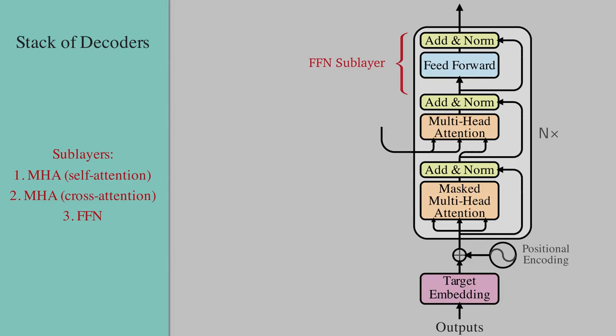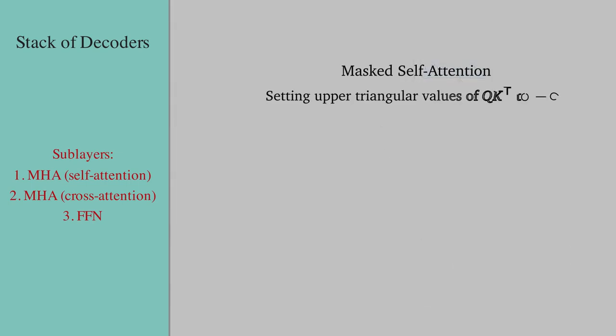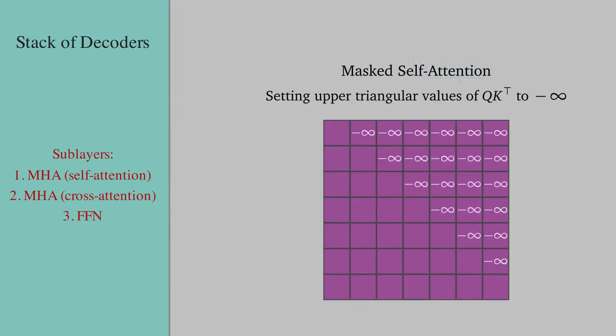For sequence-to-sequence modeling tasks, the target sequence is actually serving both as input to the decoder stack as well as the expected output. So as a result, we have to mask the attention matrix so that the model does not attend to the elements which it needs to predict. That is why we mask the compatibility matrix QK transpose by setting its upper triangular to negative infinity before applying softmax, as I explained in my previous video.